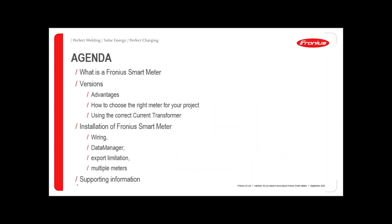The agenda today is first to have a look at what a Fronius smart meter is, how we use those in our systems and what advantages you get for monitoring your energy within the building. We'll talk about how to choose the right meter for the right project and the right installation, and also make sure that you have the correct current transformers if they're required. We'll go through the process of installing the smart meter, looking at the wiring and how you commission it on the data manager. We'll also look at how you set up export limitation and how you connect multiple smart meters together to monitor broader systems, covering specific loads and third-party systems as well.